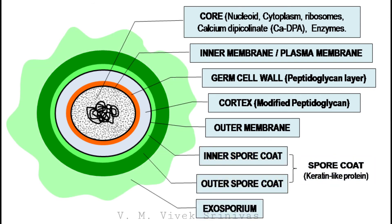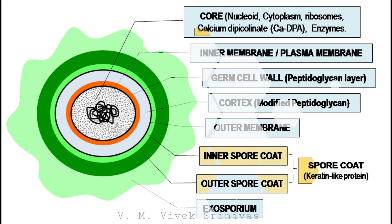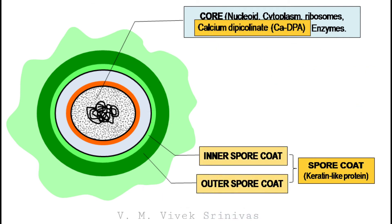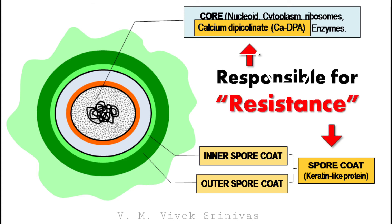So this endospore is a multi-layered structure which protects the genetic material inside the core. Among these, the calcium dipicolinic acid inside the core and the keratin-rich spore coat are the important constituents that play a major role in the resistance of the bacterial spore.